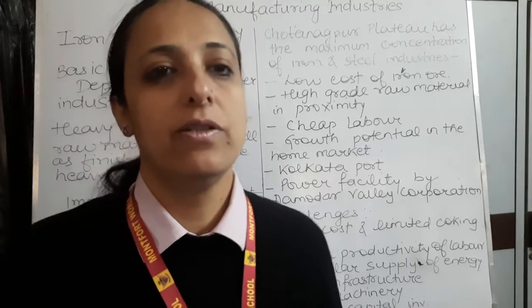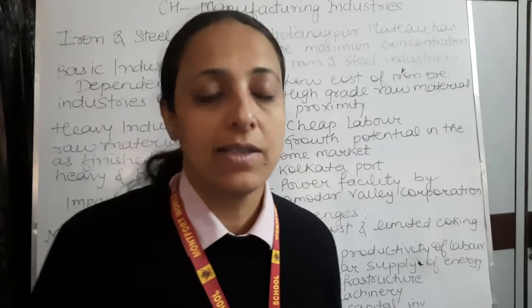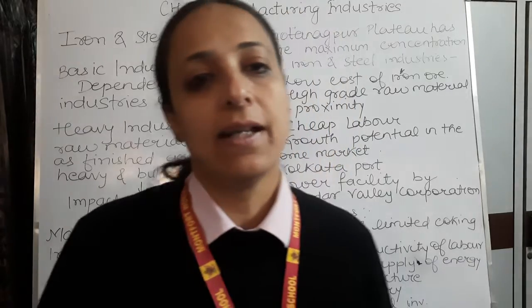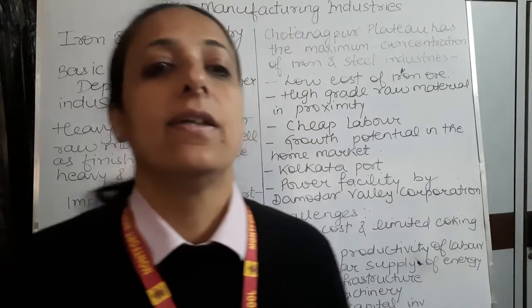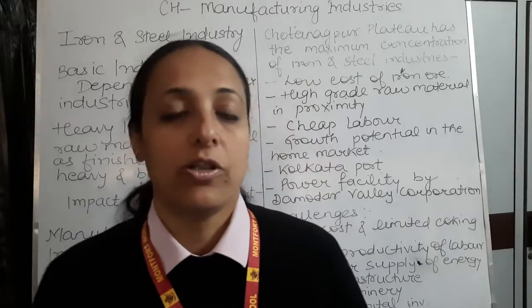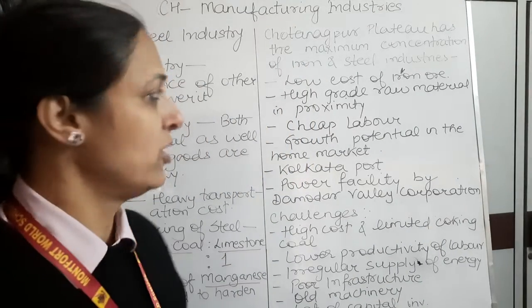Iron ore as raw material is transported by railways to the iron and steel plant. In the blast furnaces it is heated, impurities are removed by introducing limestone, and coking coal is added to provide heat. The molten iron ore is then poured into moulds called pigs, producing pig iron. Further, pig iron is converted into steel by removing impurities and adding chromium, nickel, and manganese to harden the steel. The final stage is shaping the metal through pressing, rolling, and forging.